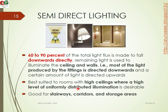In semi-direct lighting, 60 to 90% of the total light is directed downwards directly onto the work plane, and a certain amount of light is directed upwards. This type is best suited for rooms with higher ceilings, providing a high level of uniformly distributed illumination.